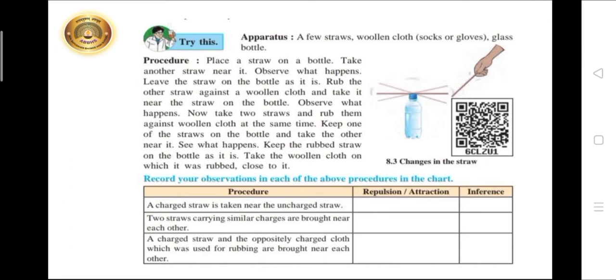A charged straw and the oppositely charged cloth which was used for rubbing are brought near each other. Then there will be attraction. Inference is attraction between unlike electric charges.